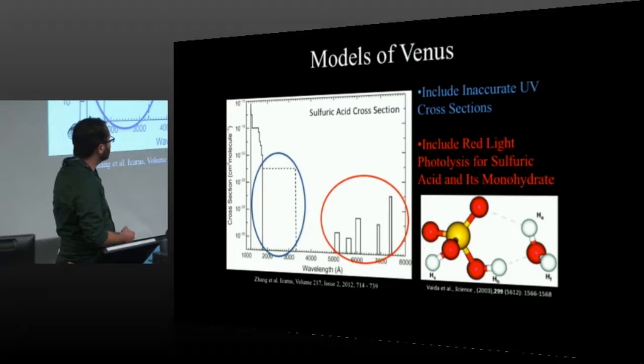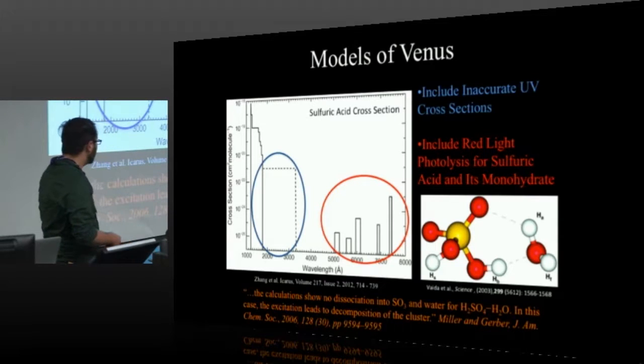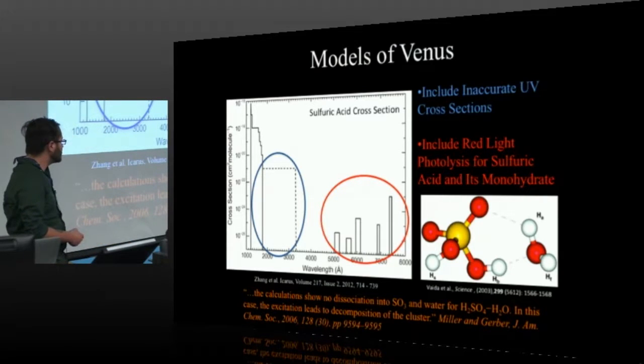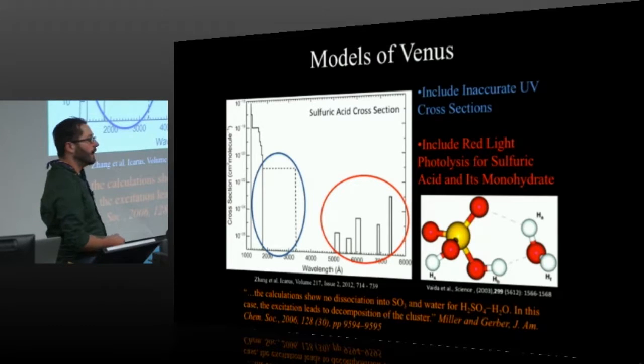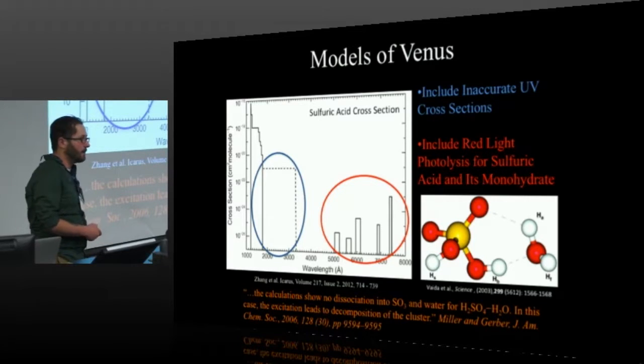Another thing they do is they include red light photolysis of the sulfuric acid monohydrate, where the sulfuric acid molecule is complexed with a water molecule. This does lower the barrier for this reaction. However, there is one problem with that. And that a lot of work that's been done looking at this has shown that instead of leading to photolysis, instead what happens is the energy goes into breaking these hydrogen bonds and leads to dissociation of the cluster rather than photolysis of the sulfuric acid. So neither of these things are likely to be actually happening in the atmosphere.